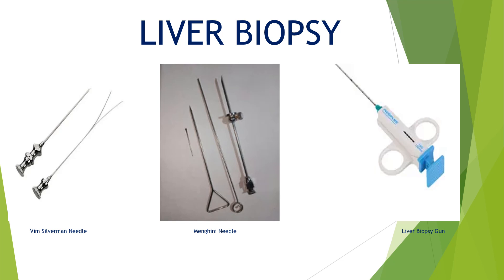The second one is what is called the Menghini needle — it is a four-pieced specimen with a guard, and it can be easily identified. The last one is a liver biopsy gun; this gun can also be used for kidney biopsy and any other biopsy. So these are three types of needles used for liver biopsy.